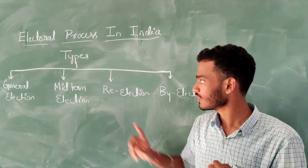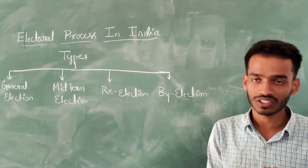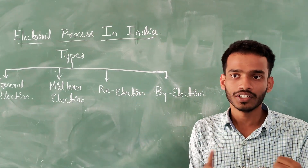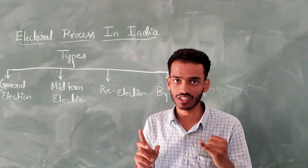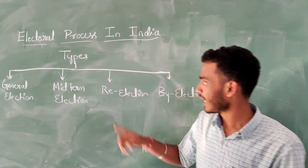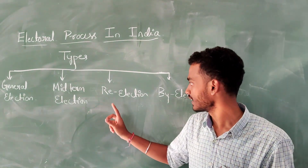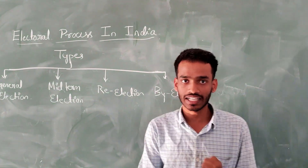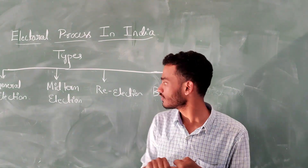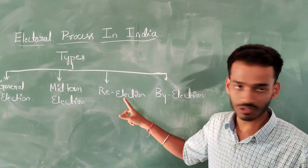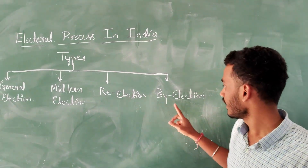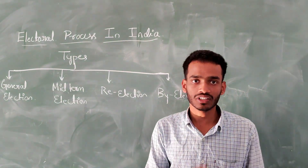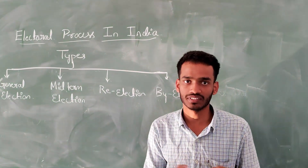General elections are held every five years for the Lok Sabha. Midterm elections are conducted due to government dissolution or party dissolution. Re-elections are conducted due to irregularities in elections, such as bribing and threatening of candidates. By-elections are conducted due to the death or resignation of a present member.